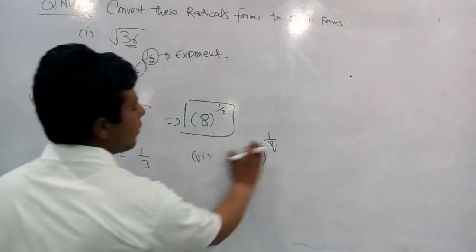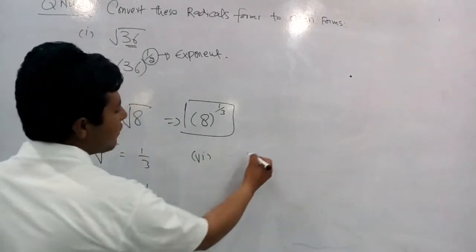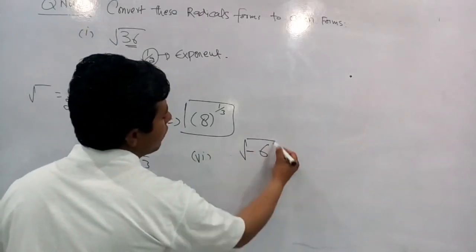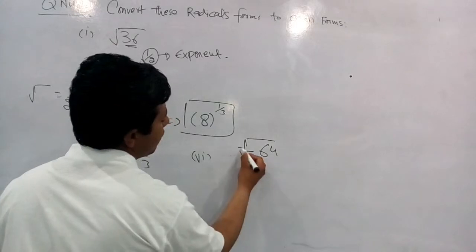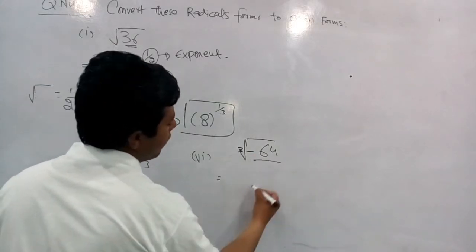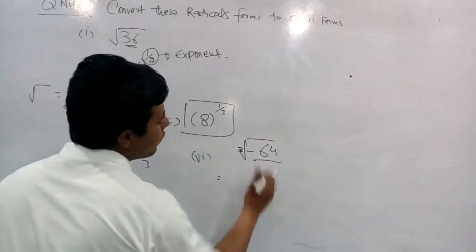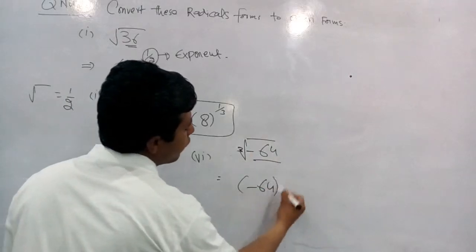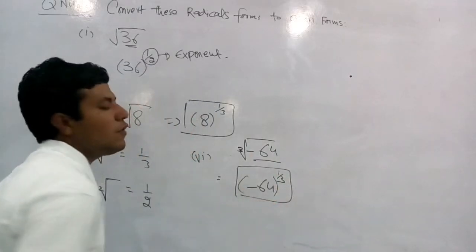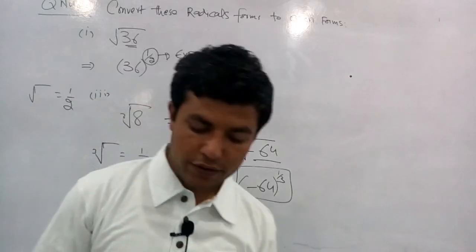Question number 6: cube root of (minus 64). Minus 64 لیں گے اور cube root کی value 1/3 ہے - تو اس کو exponential form میں convert کیا: (minus 64) to the power 1/3.